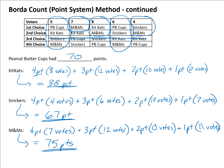Comparing all four candidates: Peanut Butter Cups had 70 points, Kit Kats had 88 points, Snickers had 67 points, and M&Ms had 75 points. The candidate with the most points was Kit Kats, so Kit Kats wins the Borda Count election.